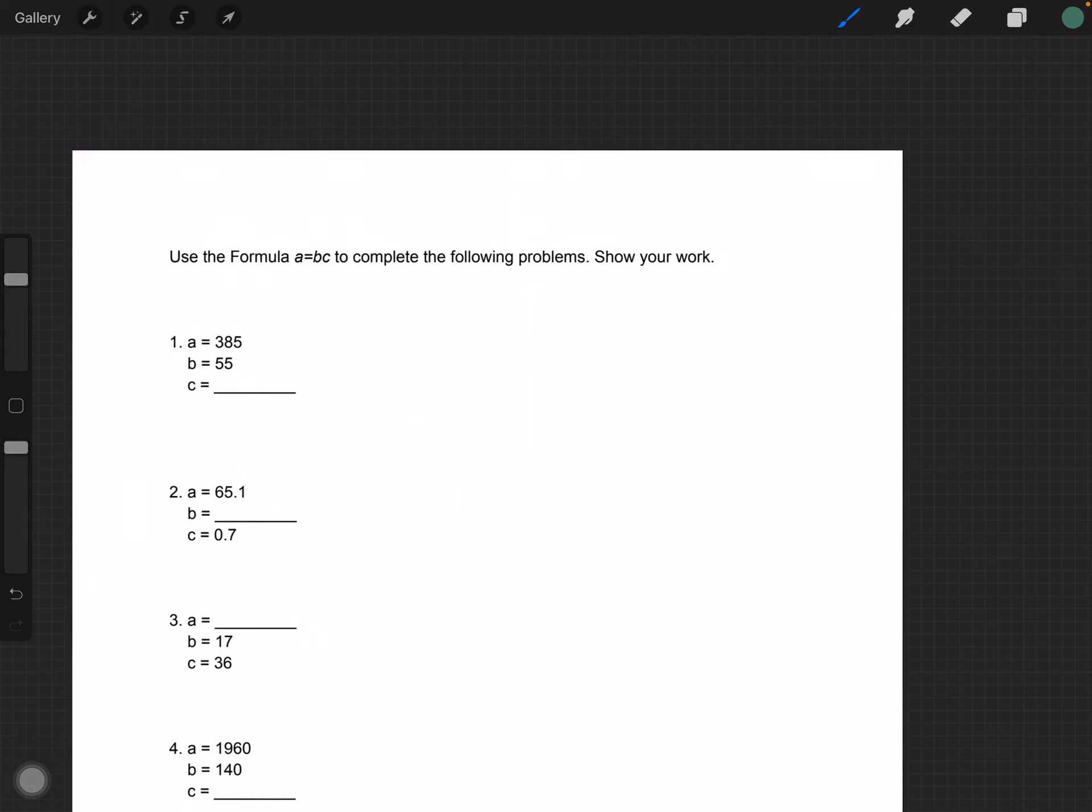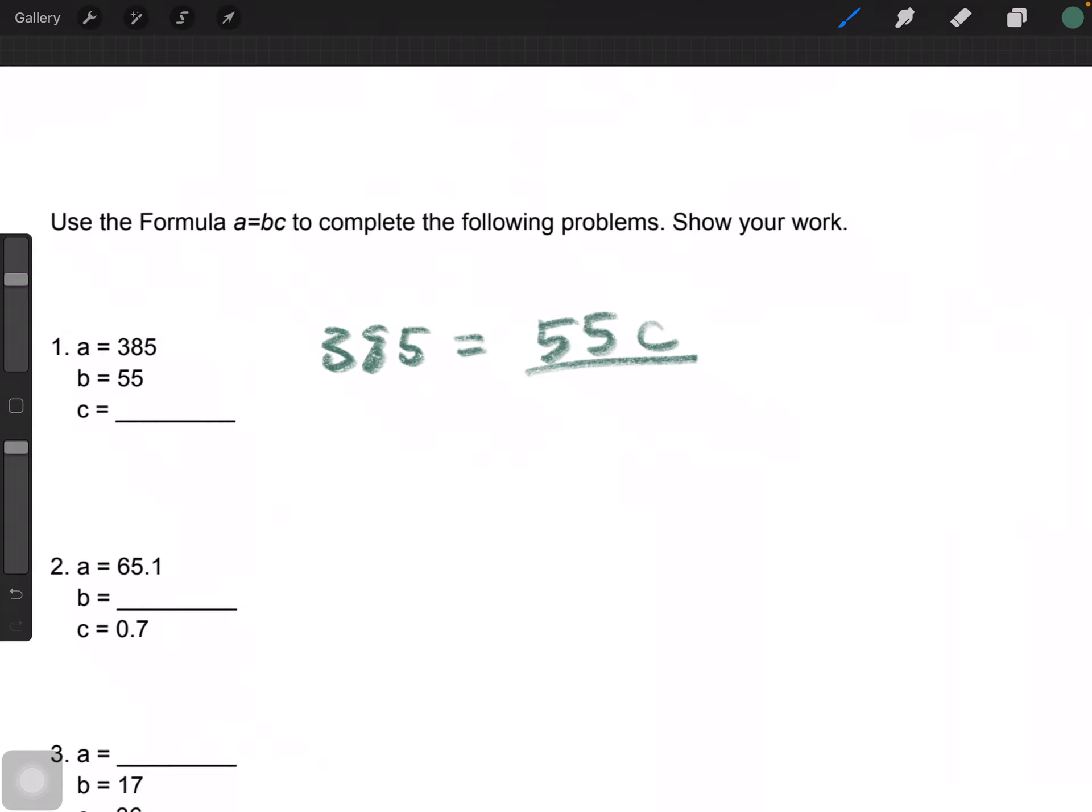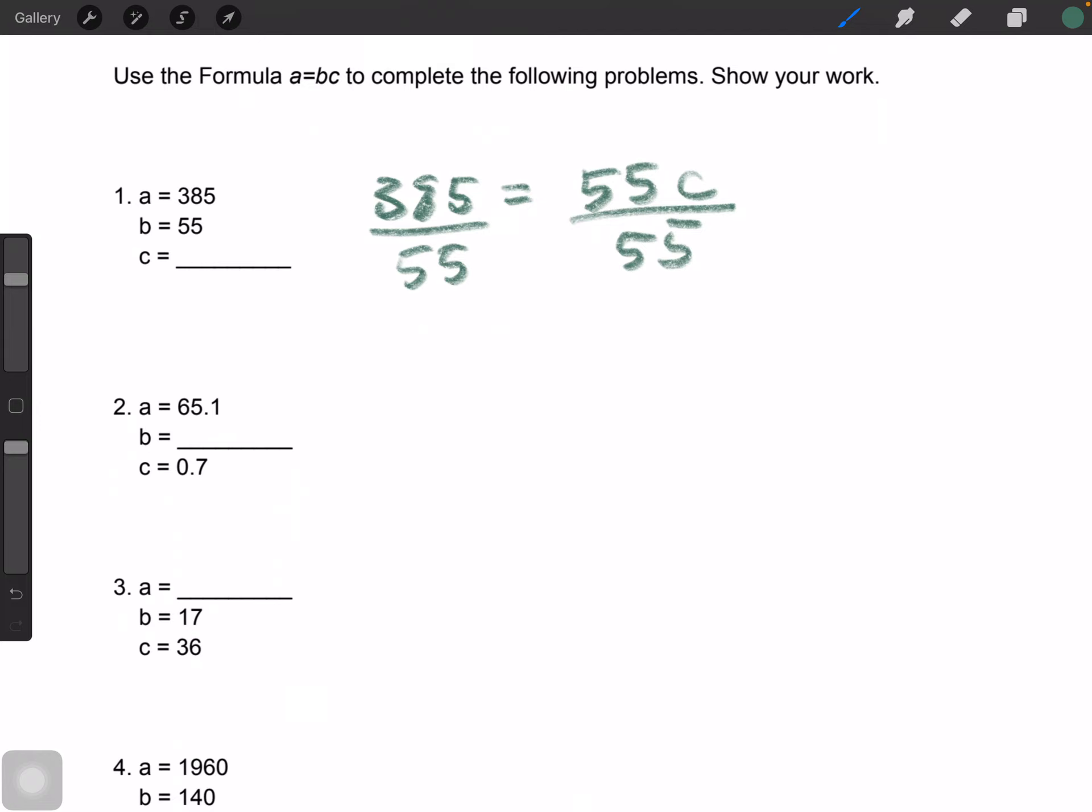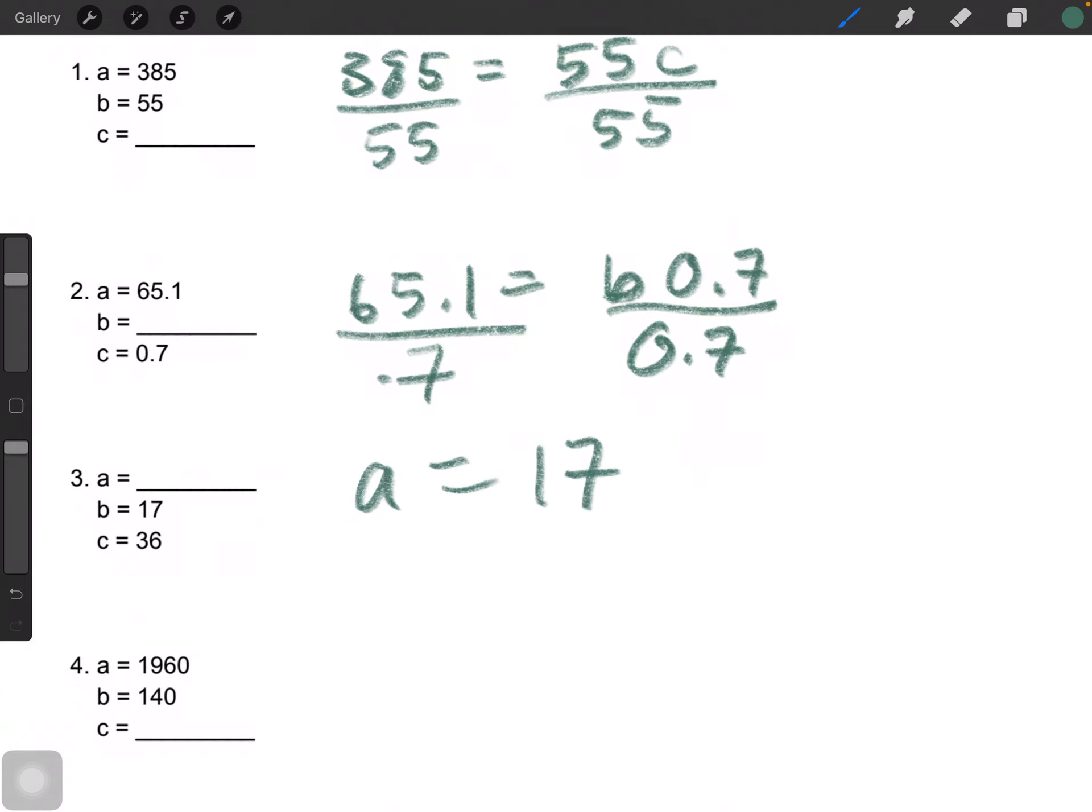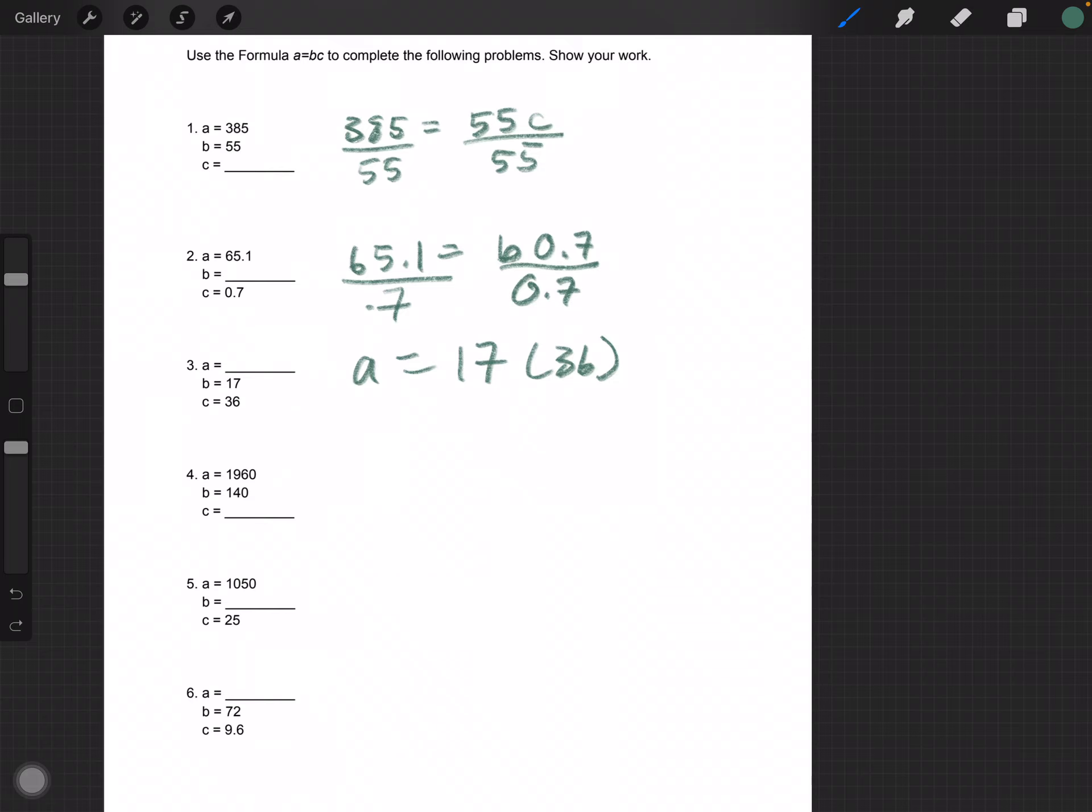Okay, and for the last page, we have using formulas. So this one says A equals B times C, and we have to follow this. So A equals B times C. You want to divide 55 from both sides. And this one, I'm just going to show you how to do it, and you can do the problem on your own. A is equal to B times C, and so you would divide both sides by 0.7. And this one, A is equal to 17 times 36, and you just multiply these together to get the answer. 4 is the same as number 1, 5 is the same as number 2, and 6 is the same as number 3, or the same operations.